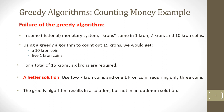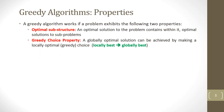The greedy algorithm results in a solution, but not in an optimal solution. A greedy algorithm works if a problem exhibits the following two properties: optimal substructure and greedy choice property. Optimal substructure states that an optimal solution to the problem contains within it optimal solutions to sub-problems. The greedy choice property states that a globally optimal solution can be achieved by making a locally optimal choice.